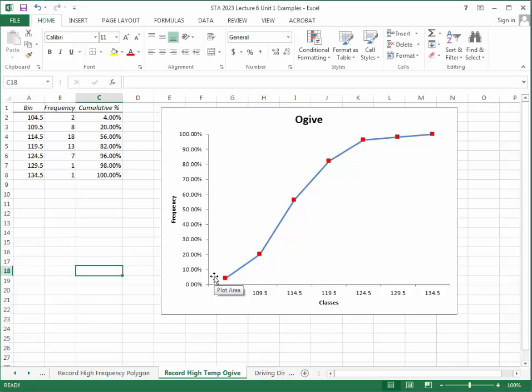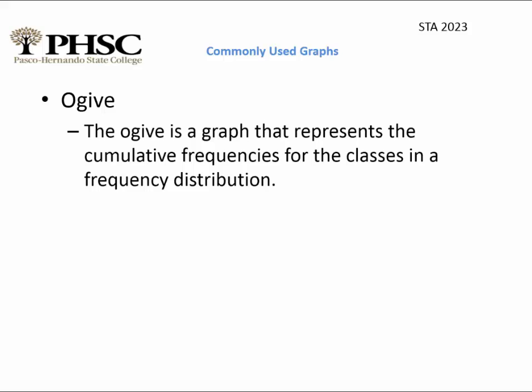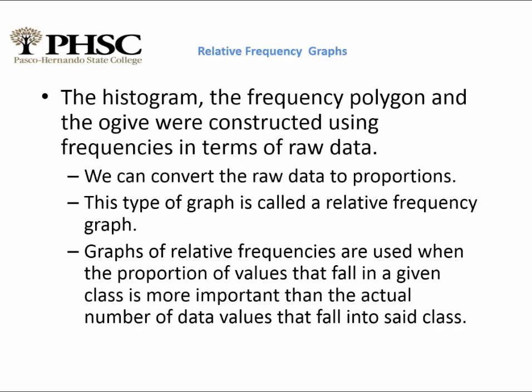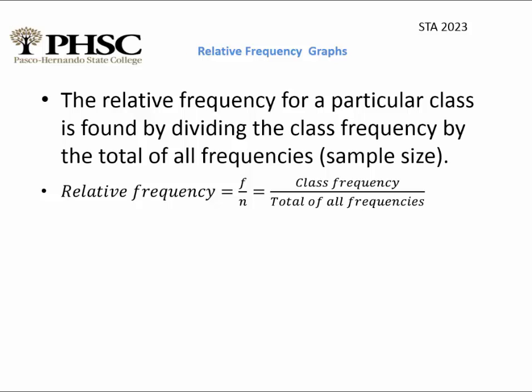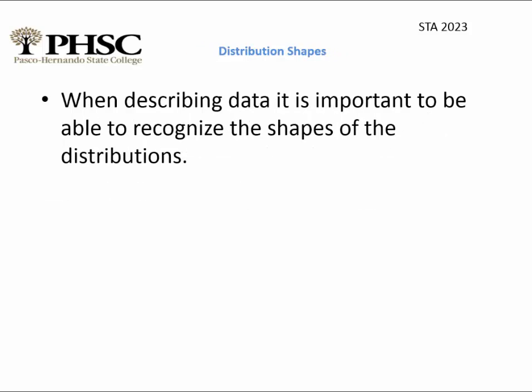At this point you have enough information to construct all the graphs required for the first lab. For relative frequency graphs, we convert raw data to proportions by dividing the frequency of each class by the total number of data points. Excel can do this calculation for you automatically.